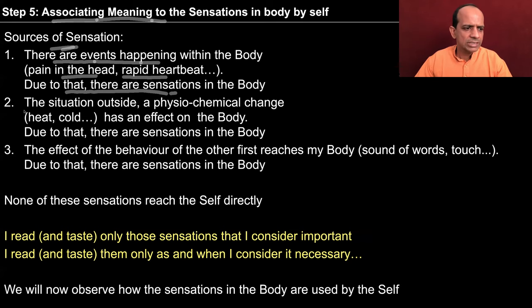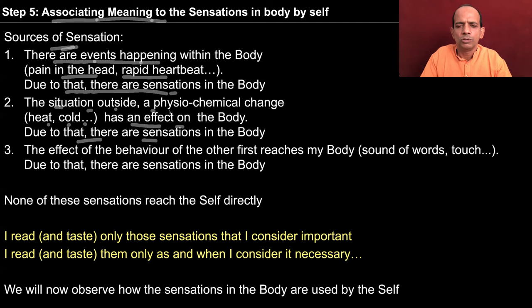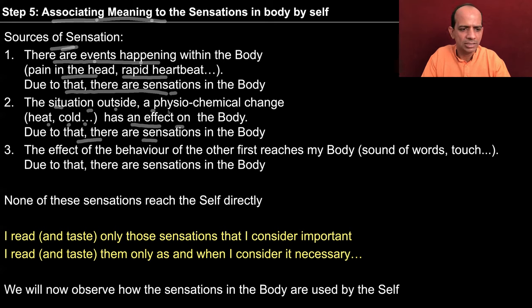The second source of sensation is the situation outside — a physiochemical change like heat, cold, or some noise — and that has an effect on the body, and due to that there are sensations in the body. For example, you are passing by the road and you hear a horn of a vehicle. This horn is an event taking place outside the body, a physiochemical change, and it has an effect on the body — that is another kind of sensation.